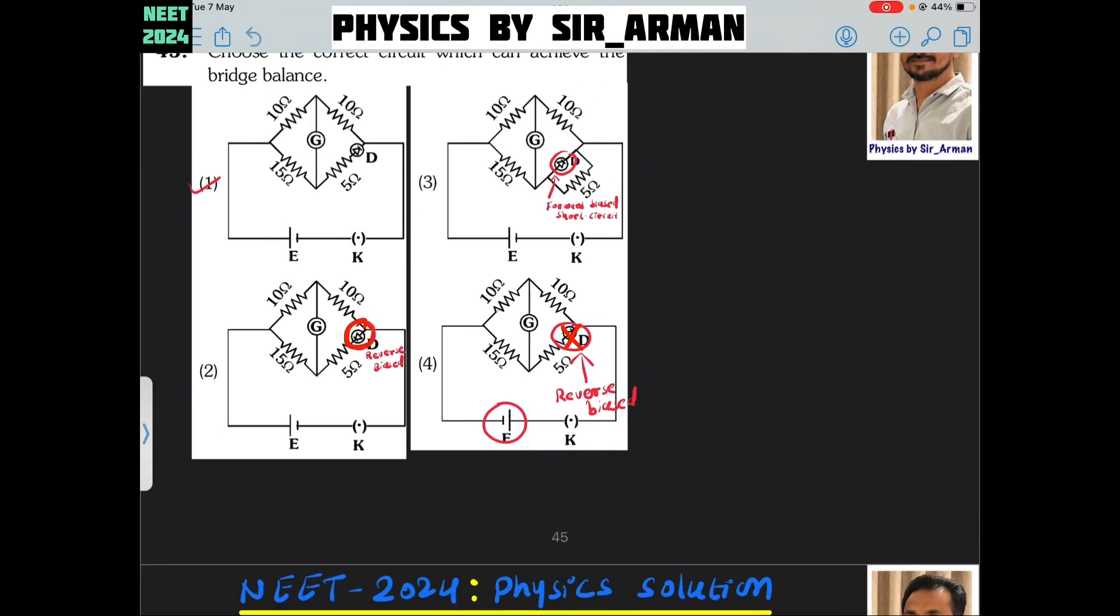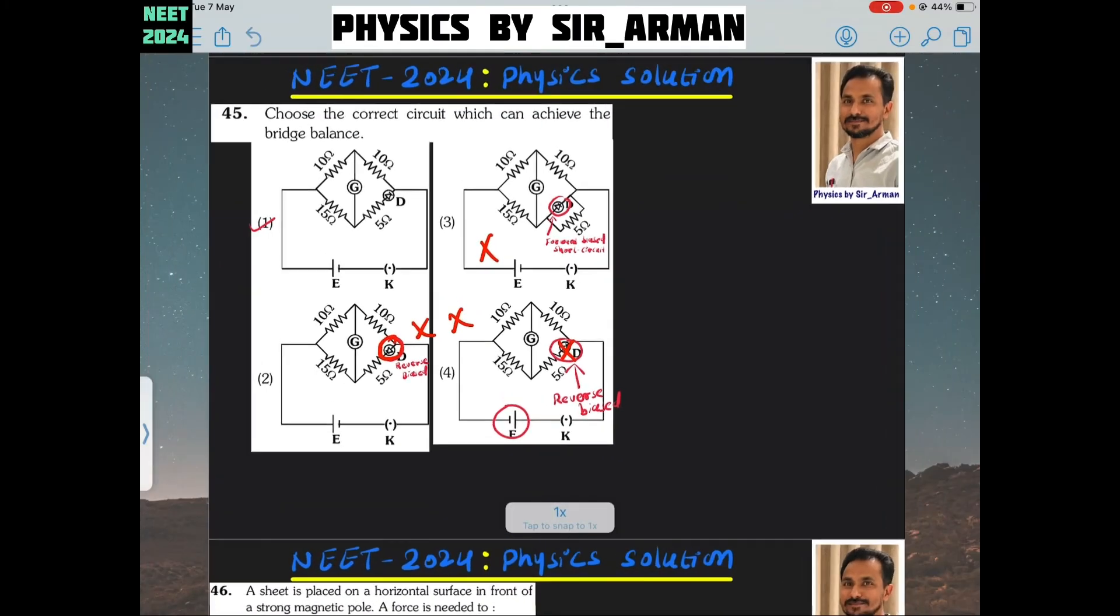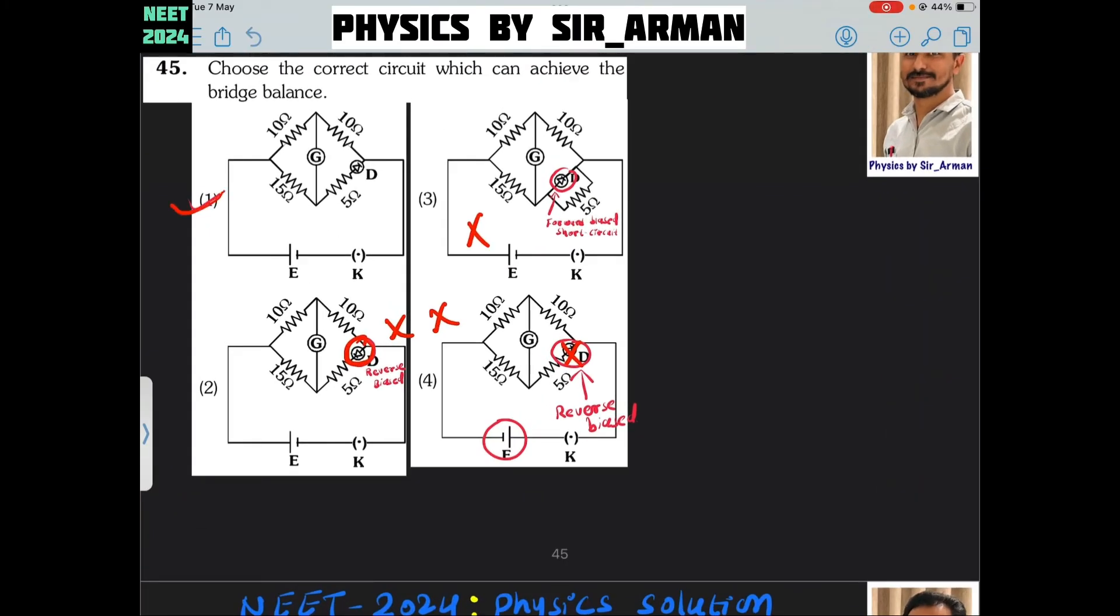Similarly, here this is also connected in reverse bias. So these all three cannot be used to achieve balance bridge. So only one option we have and that is option number one, because here it is in forward bias. So it provides zero resistance. Now you can change this value and you can achieve the balance with Wheatstone bridge.